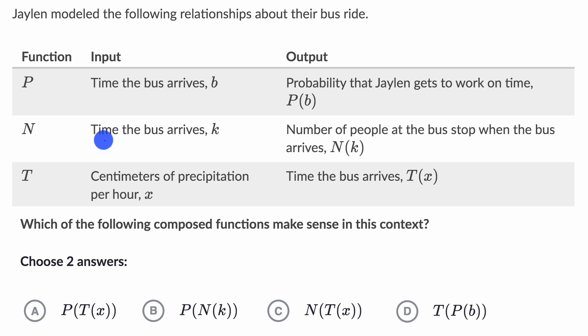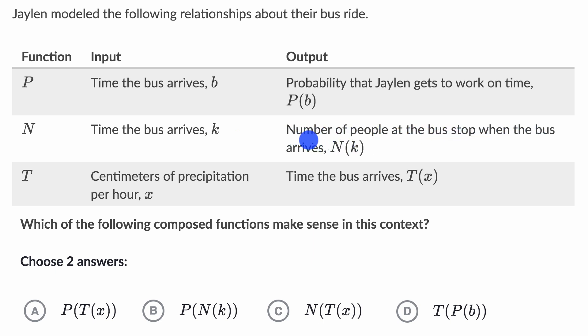Function n has the input as the time the bus arrives, given as k, and the output is the number of people at the bus stop when the bus arrives. So it's the number of people at the bus stop as a function of the time the bus arrives.